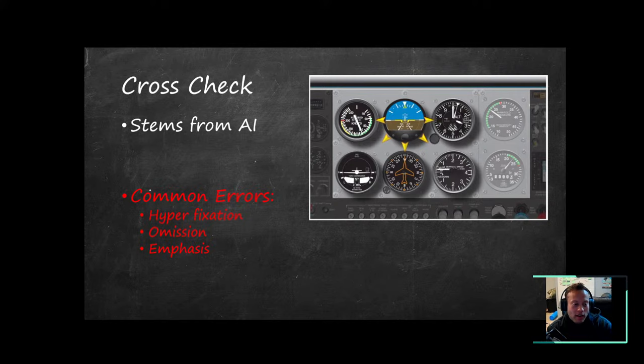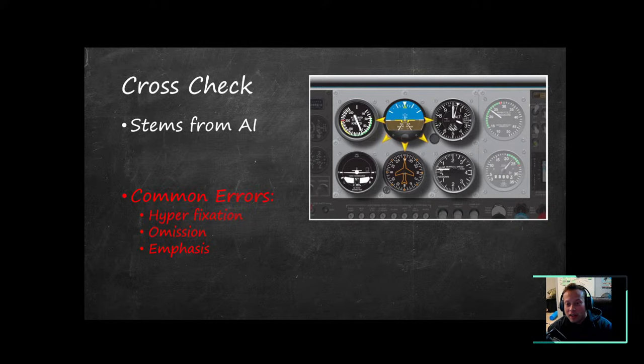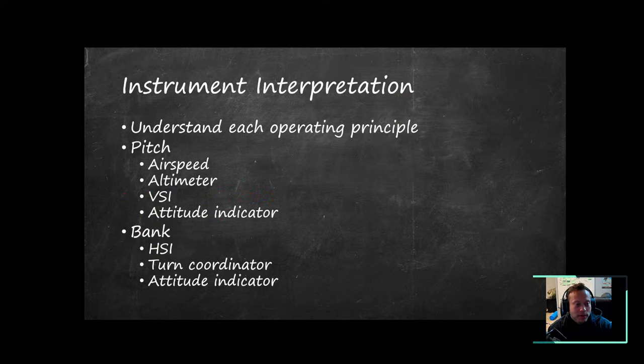Common errors in your cross-check: hyperfixation on one instrument. You establish yourself nose on the horizon and wings level, then you're hyperfocusing on your heading indicator — am I on heading? — and you stop paying attention to flying the airplane, start to get out of whack, either climb or descend, speed up, forget proper rudder inputs. Also omission — forgetting to look at an instrument — or putting too much emphasis on one instrument.